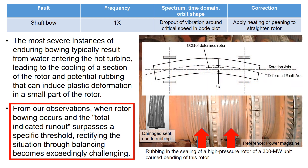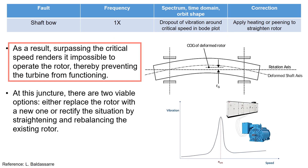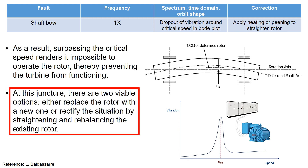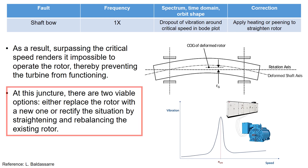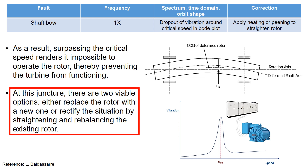From our observations, when rotor bowing occurs and the total runout surpasses a specific threshold, rectifying the situation through balancing becomes very challenging. As a result, surpassing the critical speed renders it hard to operate the rotor, thereby preventing the turbine from functioning. So there are two viable options: either replace the rotor with a new one, or rectify the situation by straightening and rebalancing the existing rotor.